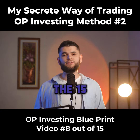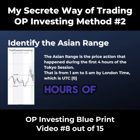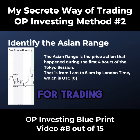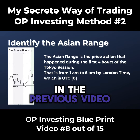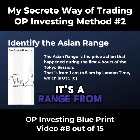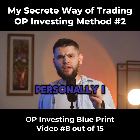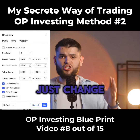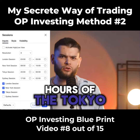Open any pair on the 15-minute timeframe, then identify the first four hours of the Asian session. This is going to be our reference point for trading our supply and demand zones. In the previous video, we covered that it's a range from midnight to 4am based on London time. I prefer using the sessions indicator — just change the settings and choose the first four hours of the Tokyo session.